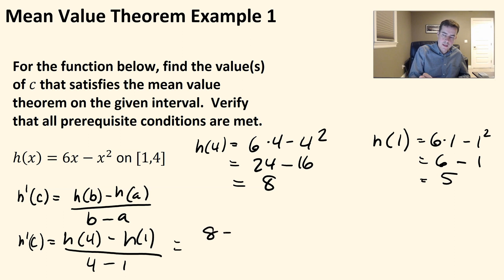So this becomes 8 - 5 over 4 - 1. So that'd be 8 - 5 is 3, 4 - 1 is 3. So we get 1. So we need h'(c) to equal 1.